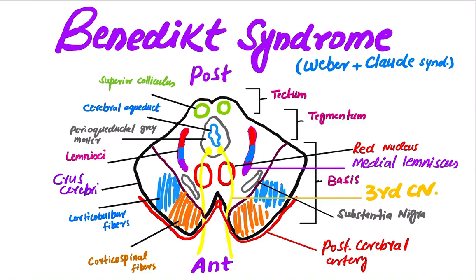Benedict syndrome occurs due to the occlusion of the perforating branches of the posterior cerebral artery, and the following structures are involved: third nerve, red nucleus, corticospinal fibers, and substantia nigra. These structures are involved in Benedict syndrome, so this is the combination of Weber and Claude syndrome.